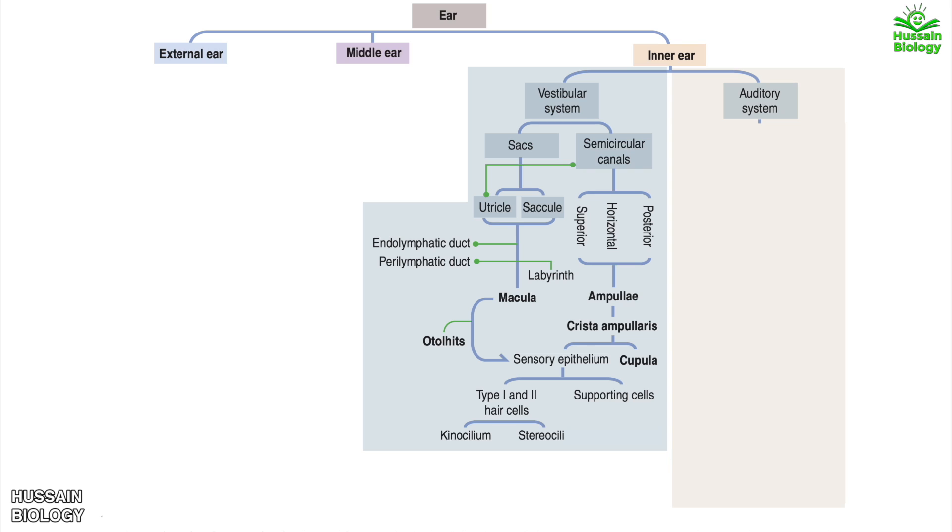Now getting to the auditory system, we have the cochlear duct which is divided into scala vestibuli, scala media, and scala tympani. Within the scala media we have the organ of Corti, which is the receptor organ for hearing.